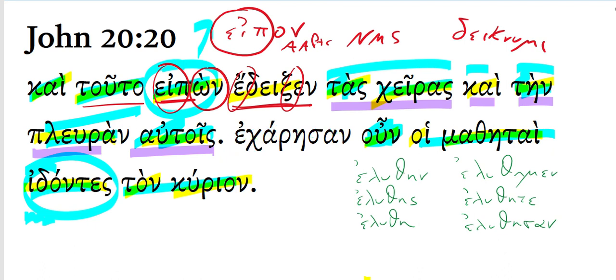That word, ekaresan, I want to talk just a bit more about. The lexical form of that is cairo, to rejoice. And this is a little bit of an unusual form. The form is aorist passive indicative third person plural. But really, it probably should be parsed a medial passive because there's a middle sense to it. And verbs of emotion often are found in medial passive form or a middle form.